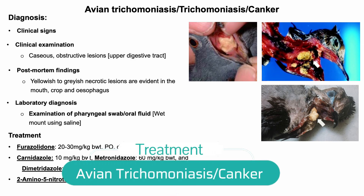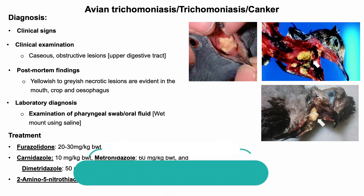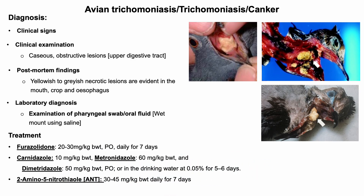Treatment of avian trichomoniosis or canker: furazolidone, carnidazole, metronidazole, and dimetridazole can be given. The same drugs can also be used to treat asymptomatic carrier birds to prevent the spread of infection.